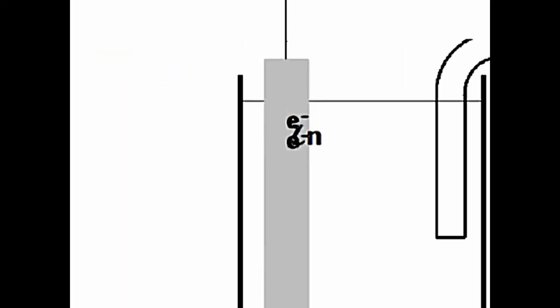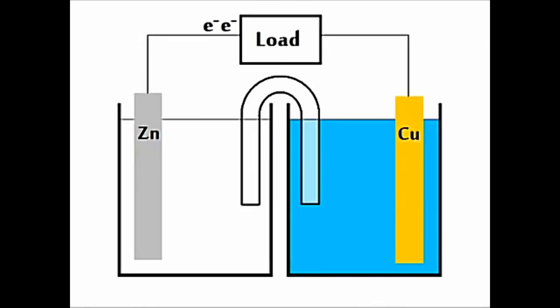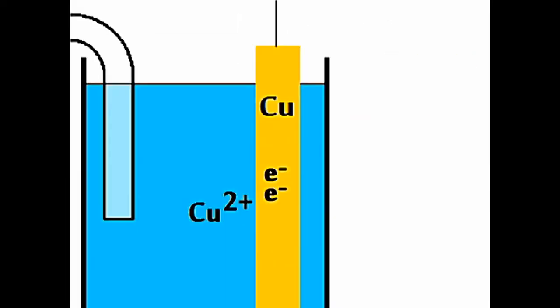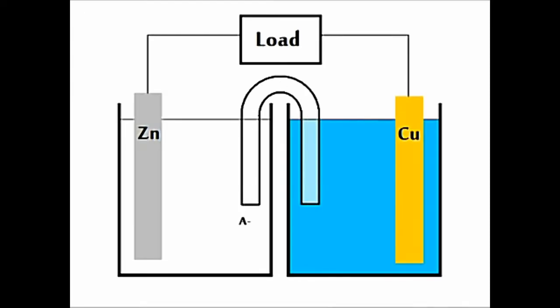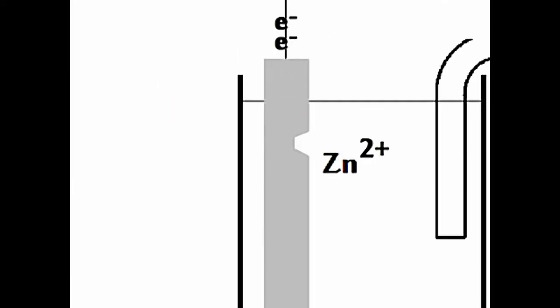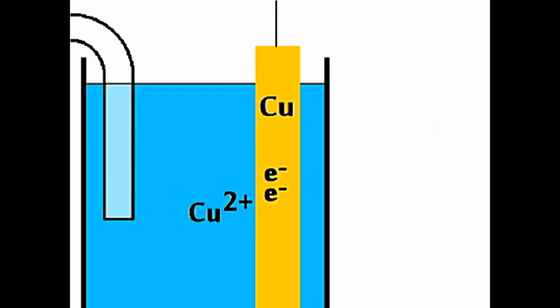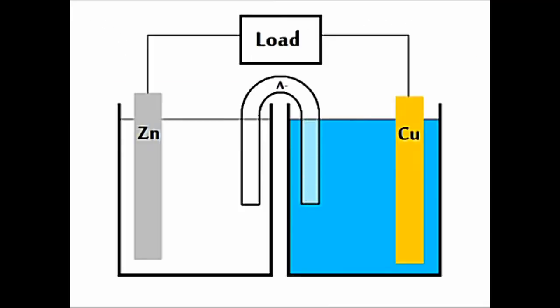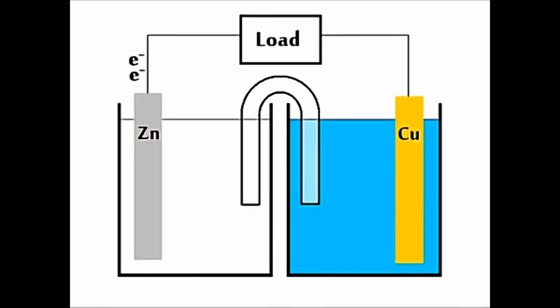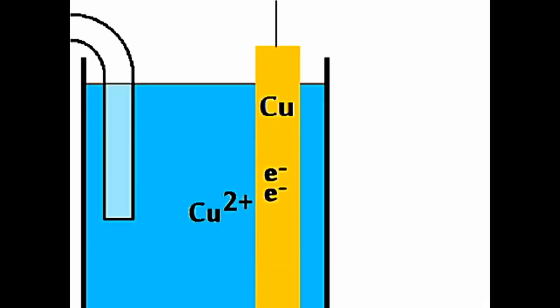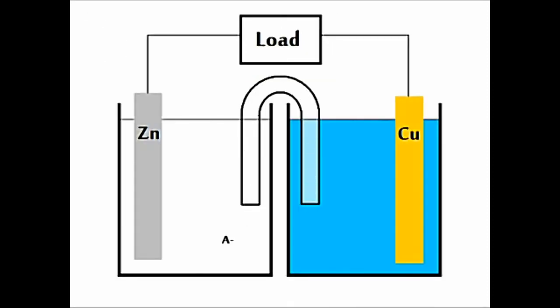We start at the anode, electrons are lost there, and go through the wire, and through the load on fire. They enter the cathode, and reduce the cations, and the anions go to the salt bridge back to where? Where? We start at the anode, electrons are lost there, and go through the wire, and through the load on fire. They enter the cathode, and reduce the cations, and the anions go to the salt bridge back to where? Where?